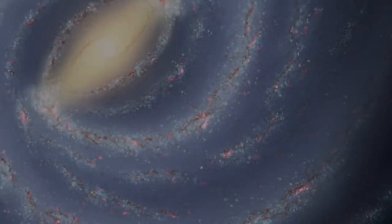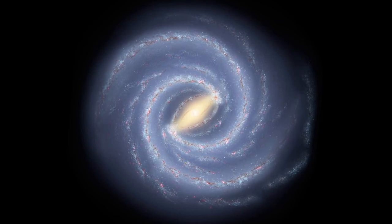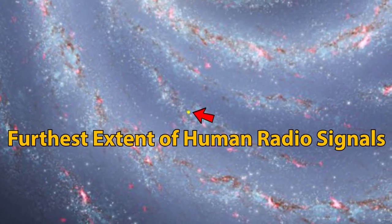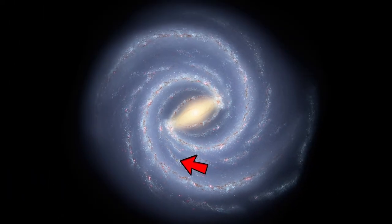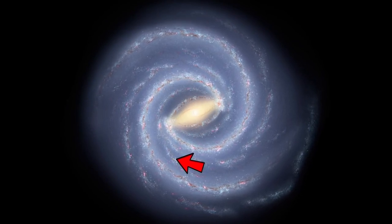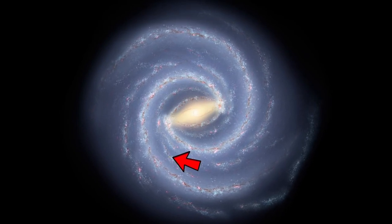When we zoom out even further, we can see the entire Milky Way galaxy, inside of which Earth is located right here. This yellow dot is the furthest extent of humanity's radio broadcasts throughout history, which means that any possible aliens who live outside of this range are totally unaware of humanity's presence. It's complete silence outside of this yellow dot as far as we are currently aware.